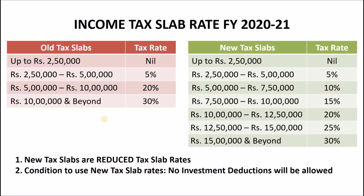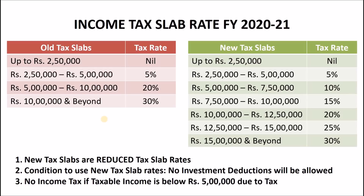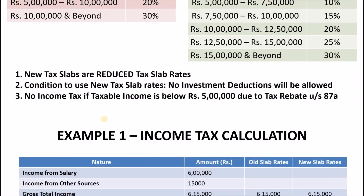Another important point to note is that if your taxable income is below Rs 5 lakhs, you need not pay any income tax. This is possible because of the tax rebate under Section 87A. Let us now understand these points with the help of examples.